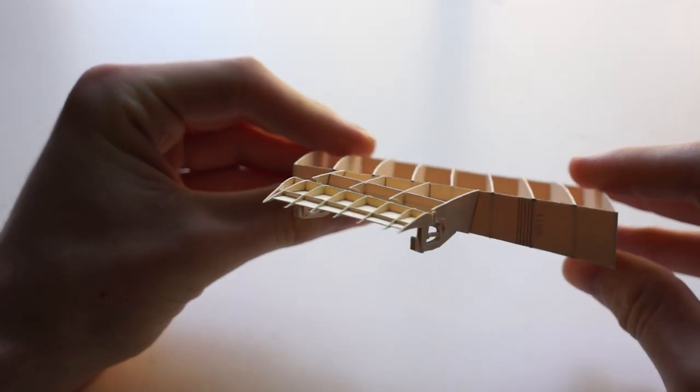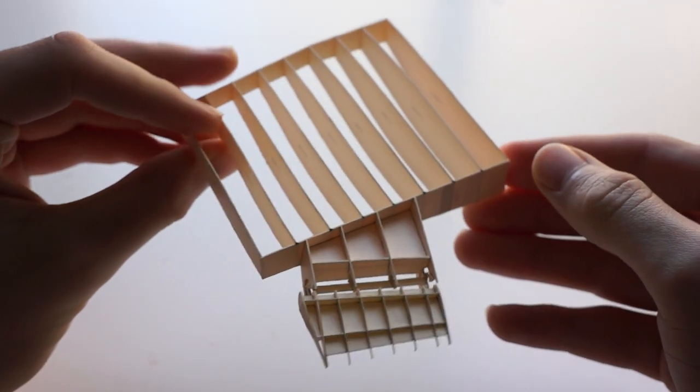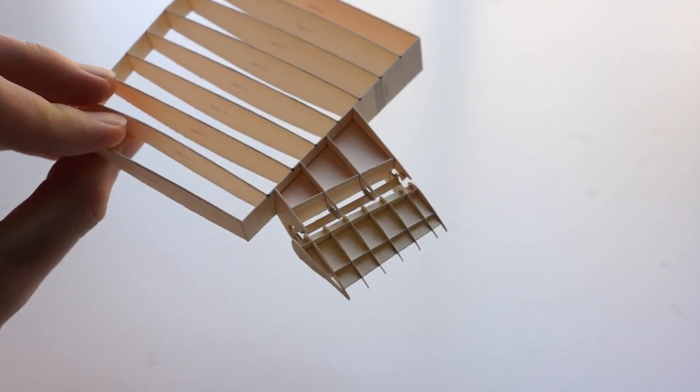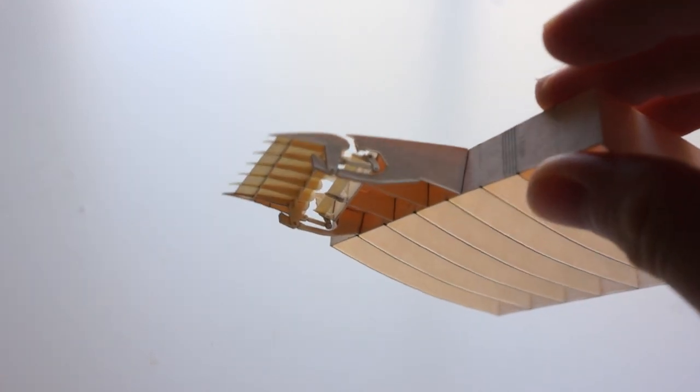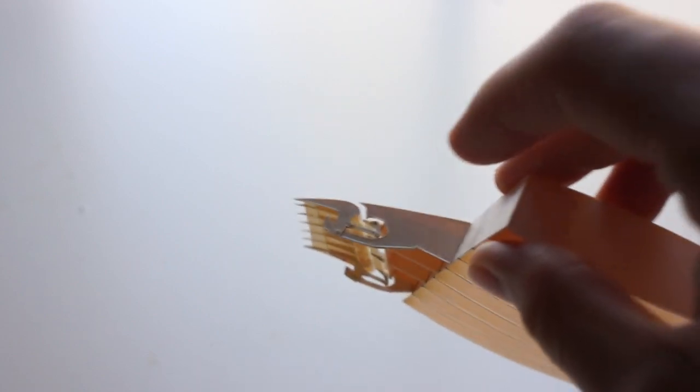The next part, which was a bit more complicated, was the flapperon, which combines the functions of a flap and an aileron. I'm sure a lot of you have seen these in flight and understand what they do.